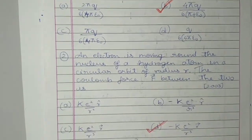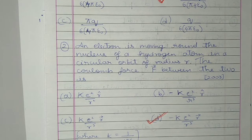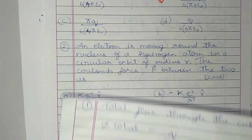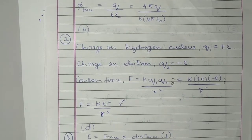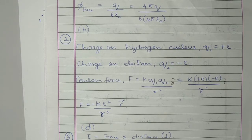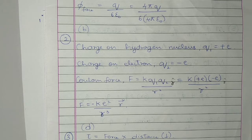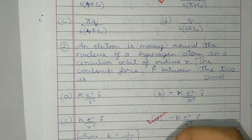Question 2: An electron is moving around the nucleus of a hydrogen atom in a circular orbit of radius R. The Coulomb force F between the two is — the charge on the hydrogen nucleus is positive e because it contains only a proton; charge on electron is minus e. Coulomb force is given by KQ1Q2 by R squared. In vector form it is represented by Ke² by R³ with a negative sign. So that is option D.